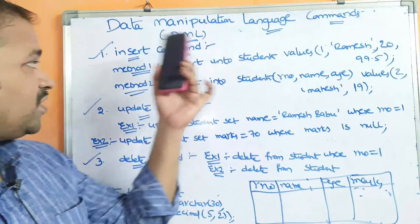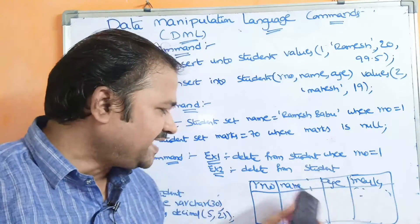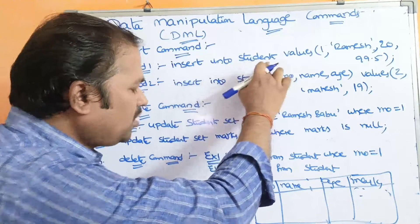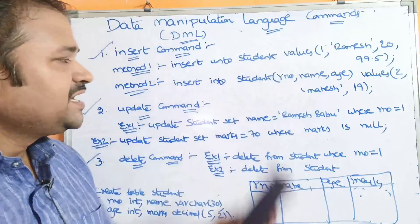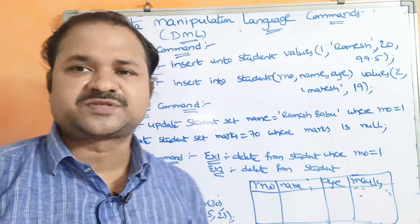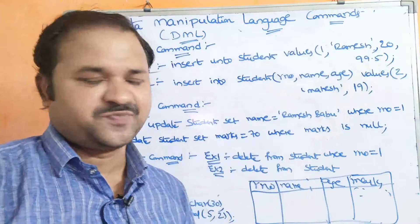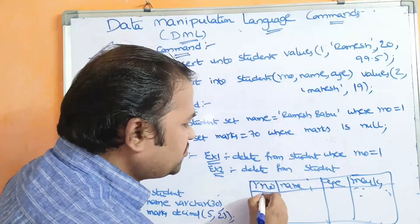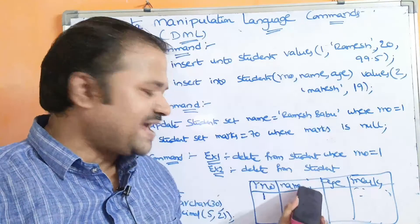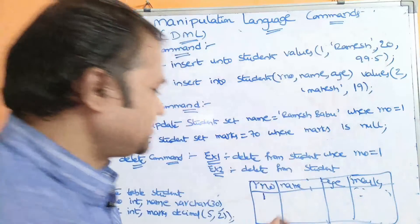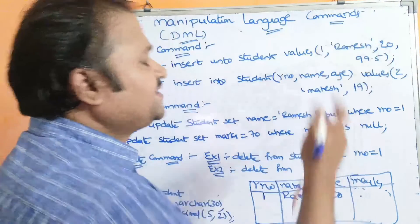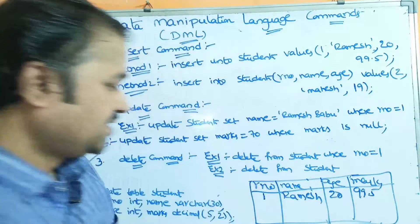The first operation is INSERT command. By using INSERT command, we can insert data into the table. We can do the insertion in two ways. The first method: INSERT INTO student VALUES. We use this command if we want to insert data in each column. We have four columns, so we provide all four values — for example: 1, 'Ramesh', 20, 99.5. Here 1 is roll number, 'Ramesh' is the name enclosed in quotes since it's a character type, 20 is age, and 99.5 is marks. This is the first row.